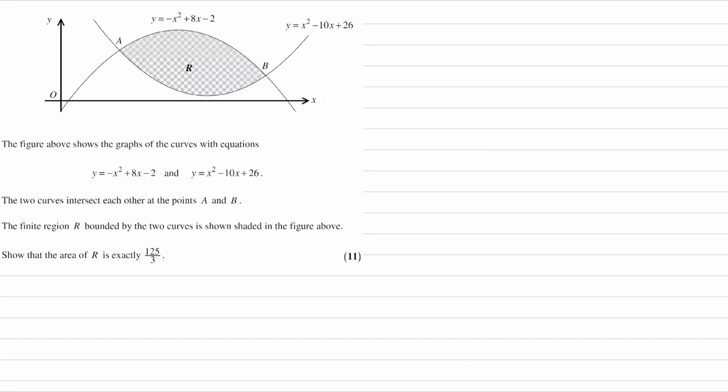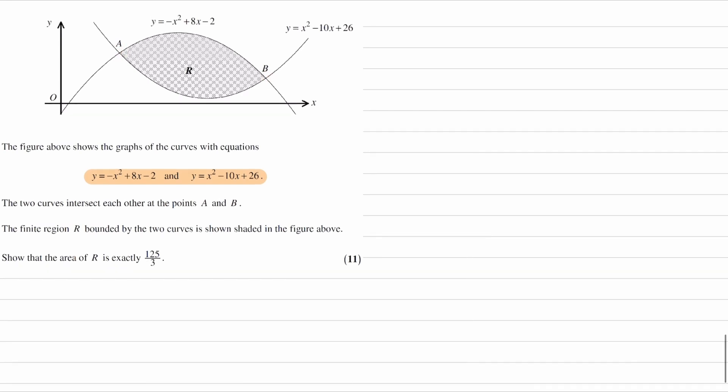The figure above shows the graphs of the curves with equations y equals minus x squared plus 8x minus 2 and x squared minus 10x plus 26. The two curves intersect at points A and B, this one and this one, and then we're trying to work out what this area R is here. We're trying to show that it's exactly 125 over 3.